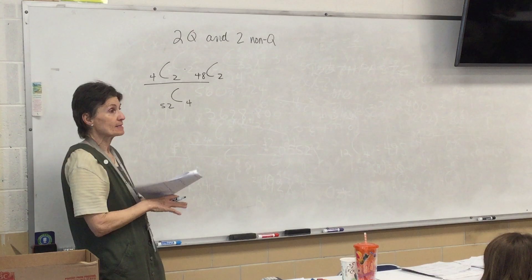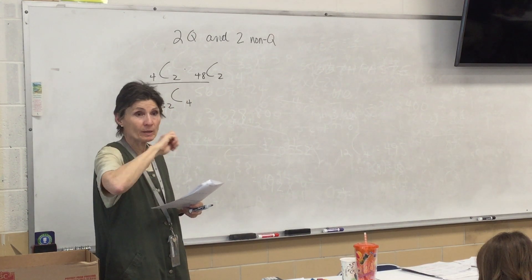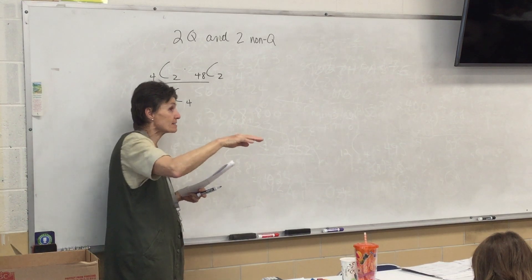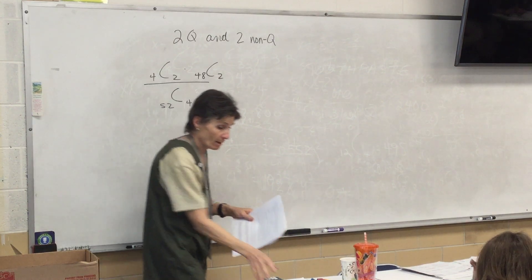What's the other card hand? 48C2 because this is a 4 card hand. 2 Queens, 2 Not Queens. If there are 4 Queens in the deck, there's 48 Not Queens in the deck. Alright, that's our setup.